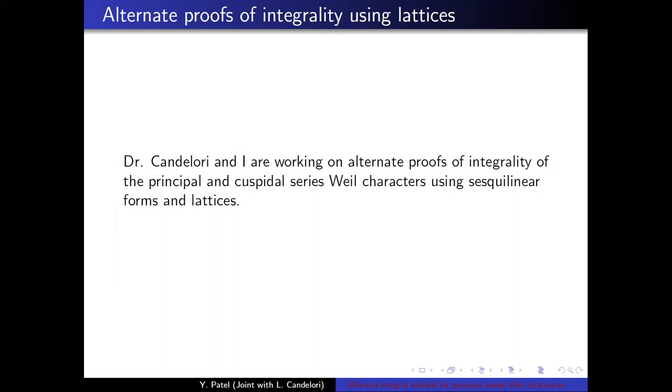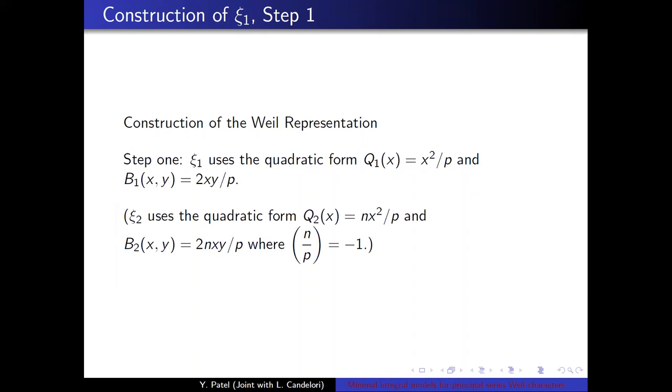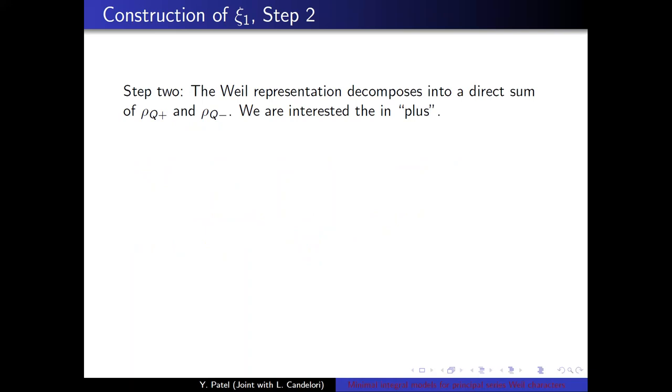So we're getting closer to what Ries conjectured in his paper, but not quite there. So let's see how to construct Zeta1 or Z1. So construction of the Weil representation Z1, we use the quadratic form that we saw in the example and associate bilinear form. X squared over P is a quadratic form. The other Weil character is done, the quadratic form is NX squared over P, where N is a quadratic non-residue modulo P. Step two, the Weil representation, the reducible one, decomposes into direct sum of rho Q plus and rho Q minus. We're interested in the plus.